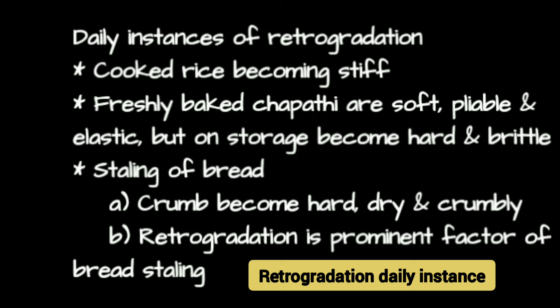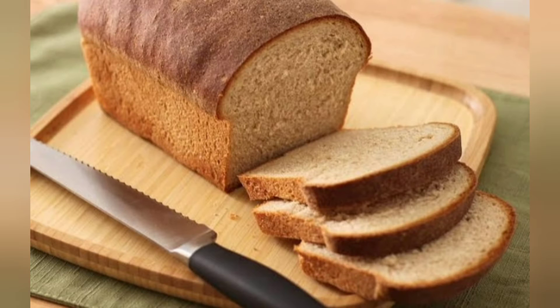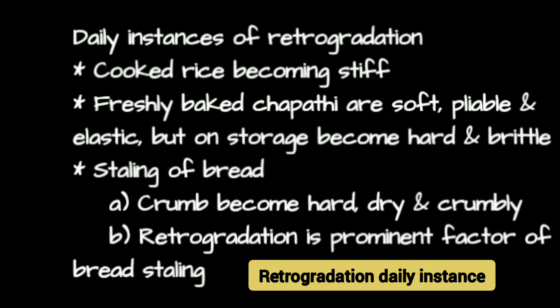We may all have heard many daily instances of retrogradation in our life. For example, cooked rice becoming stiff, freshly baked chapatis being soft initially but becoming hard during storage, and staling of bread — which is a kind of hardening that occurs when bread is stored at four degrees Celsius.